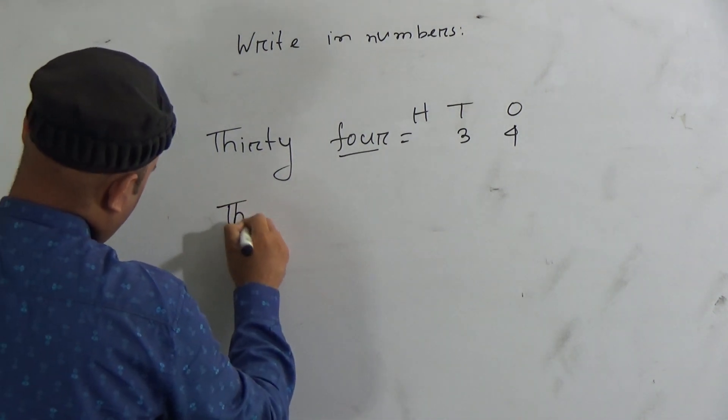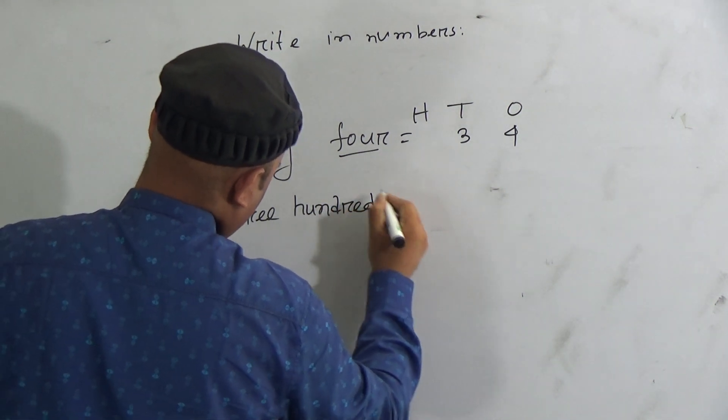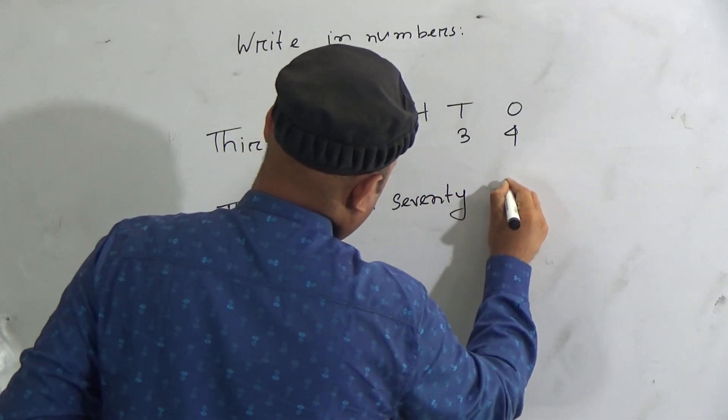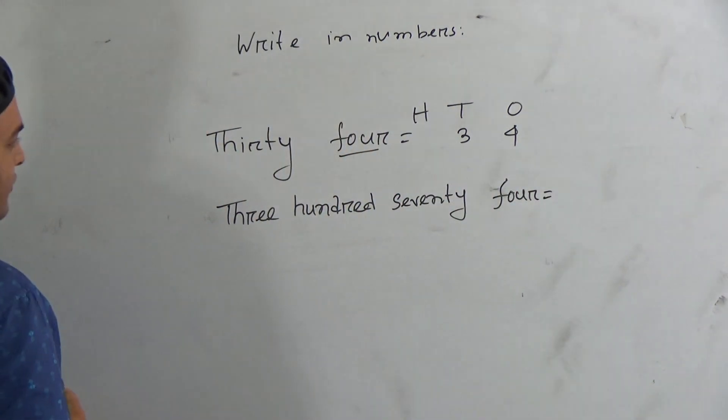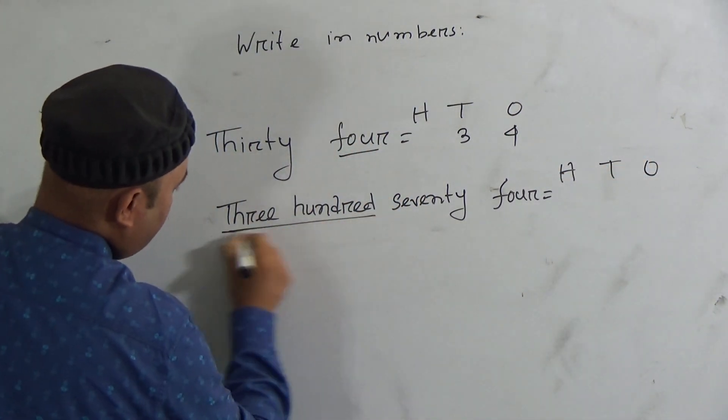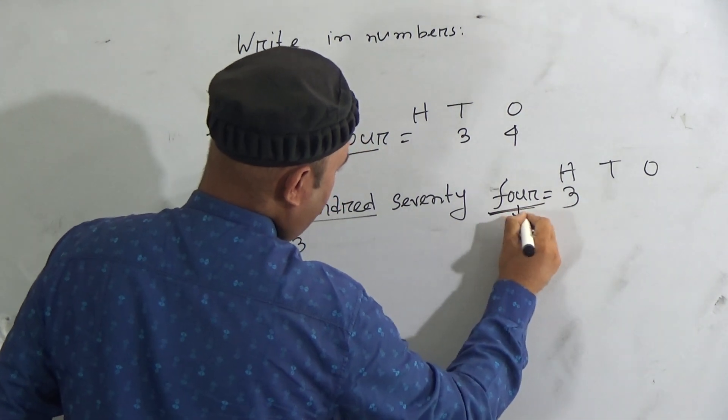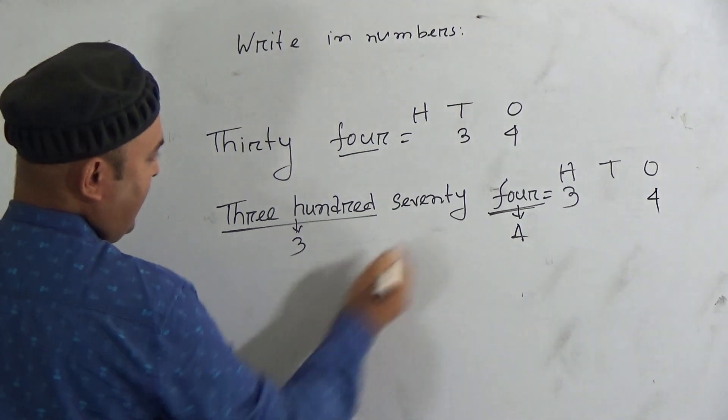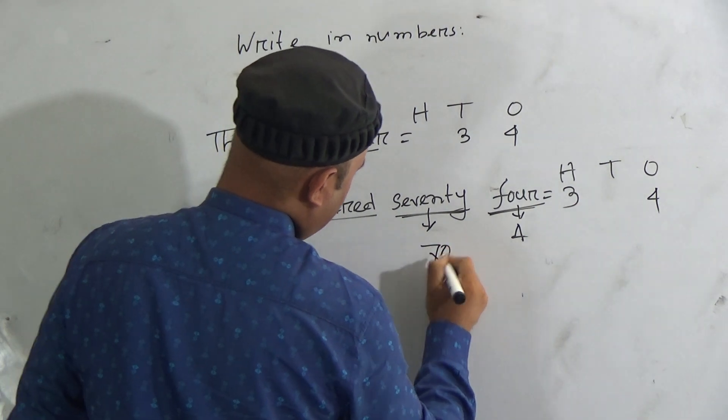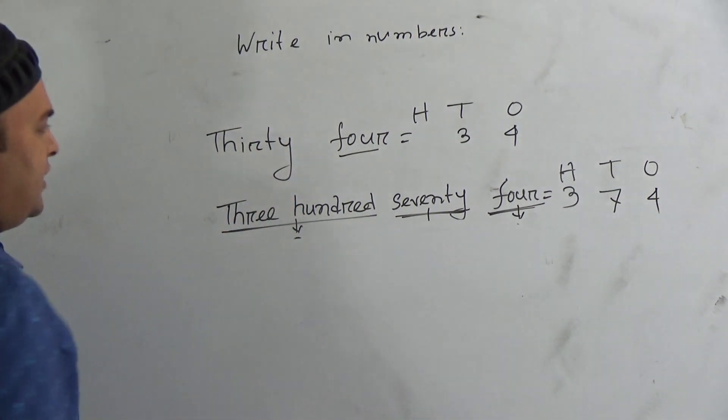Then 374. Again write here hundred, tens, and ones place. Look here, how many hundreds are there? Here is 300, so you have to write 3 in hundred place. The last digit is 4, so you have to write 4 in ones place. Here is 70, that means 7 tens. You have to write 7 in tens place. So 374.